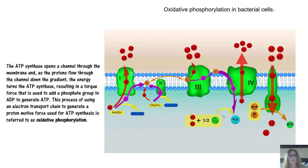During respiration, this proton motive force is used by the ATP synthase to make ATP — the vital high-energy molecule that supports growth and synthesis of all major cellular components. The ATP synthase opens a channel through the membrane allowing protons to flow through down their electrochemical gradient. The energy physically turns the ATP synthase like a little motor, and this torque force is used to add a phosphate group to ADP to generate ATP. This process of using an electron transport chain to generate a proton motive force for ATP synthesis is referred to as oxidative phosphorylation.